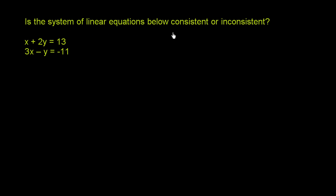Is the system of linear equations below consistent or inconsistent? They give us x plus 2y equals 13, and 3x minus y equals negative 11.